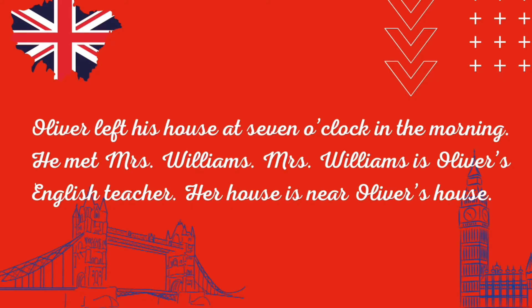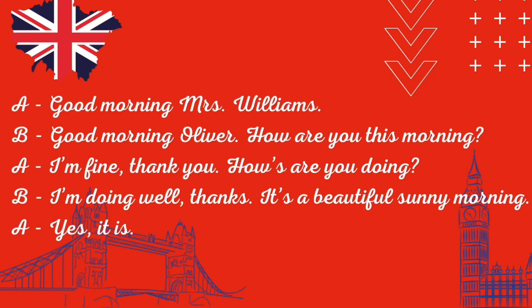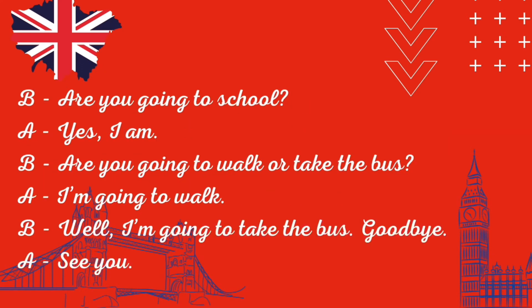Oliver left his house at seven o'clock in the morning. He met Mrs. Williams. Mrs. Williams is Oliver's English teacher. Her house is near Oliver's house. Good morning, Mrs. Williams. Good morning, Oliver. How are you this morning? I'm fine, thank you. How are you doing? I'm doing well, thanks. It's a beautiful sunny morning. Yes, it is. Are you going to school? Yes, I am. Are you going to walk or take the bus? I'm going to walk. Well, I'm going to take the bus. Goodbye. See you.